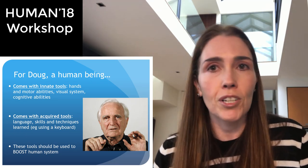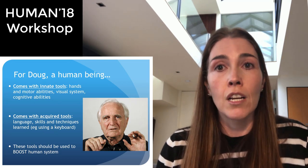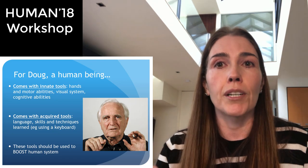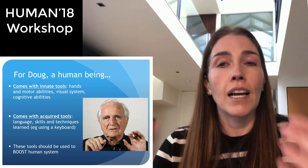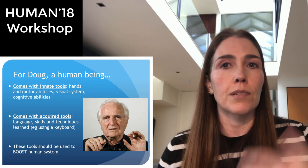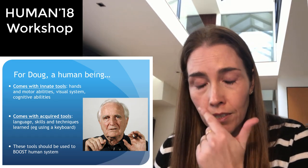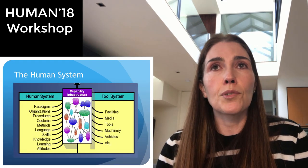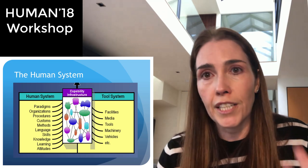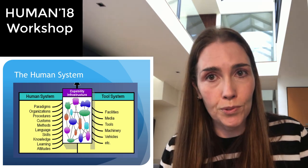The ability to program, to use a keyboard, or to figure out how to use the camera on iOS is an acquired skill — part of the human system. For Doug, to design effective technologies, what you really need to do is locate one of these existing human capabilities, whether acquired or innate, and then boost that particular capability using technology, so that you can accomplish something using the tool system and the human system together that can't be accomplished on its own. Within the tool system we include things like technologies, machinery, vehicles, facilities, and even contact lenses.